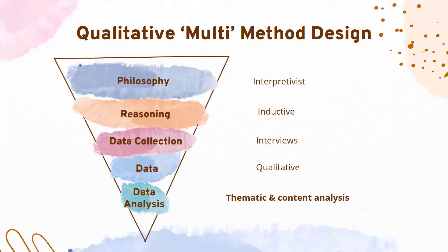Another way to adopt a qualitative multi-method research design would be to use only one type of data collection but adopt two different types of data analysis — for example, both thematic and content analysis. We could use thematic analysis to look for reoccurring themes from the interview data, and content analysis to look for the use of key terms within the interview data.